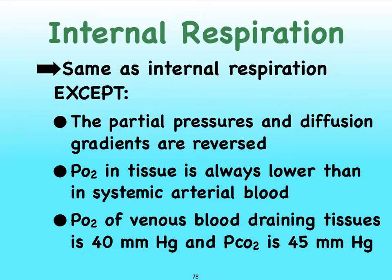We have low partial pressure for oxygen and high partial pressure for carbon dioxide in the tissues, compared to the blood that is arriving. The partial pressure of oxygen in the tissues is always lower than in the blood in the arteries, and the partial pressure for oxygen in the venous blood draining the tissues is always going to be about 40 millimeters of mercury, while for carbon dioxide it's about 45.